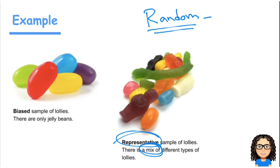So a random method, things like simple random sampling, or stratified, or systematic sampling, those will all give us a representative sample.